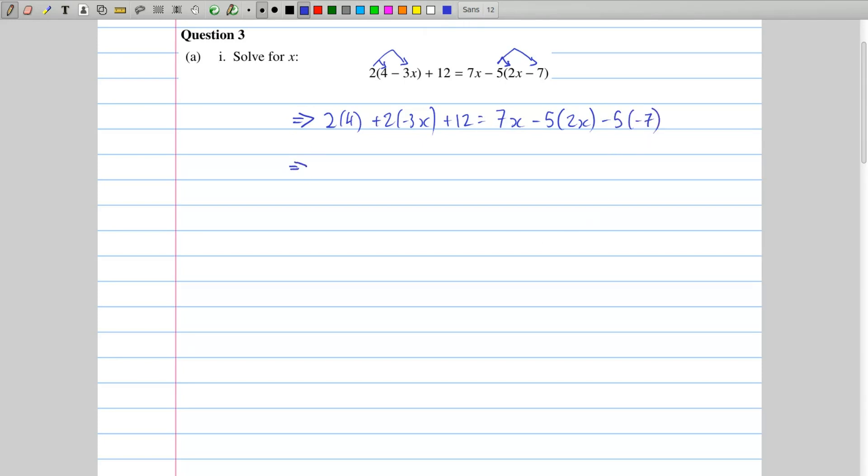Now we have to just clean it up a little bit, so we get 8 from that. This is a minus 6x, plus 12 from the previous line. Then we have 7x, minus 5 times 2 is minus 10x, and lastly a minus 5 times a minus 7 is going to be a plus 35. Getting it up a little bit more, so minus 6x. Here I have an 8 and a 12, which is going to be plus 20. And here I've got 7x minus 10x, which is minus 3x, and a plus 35.